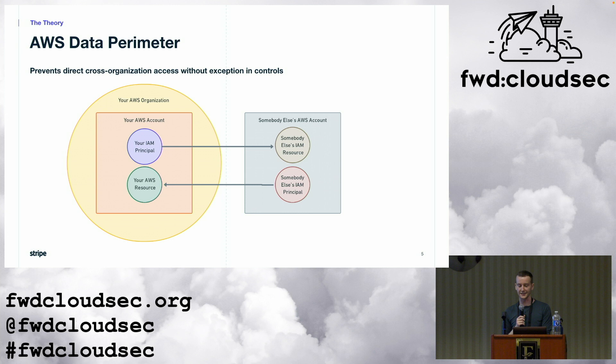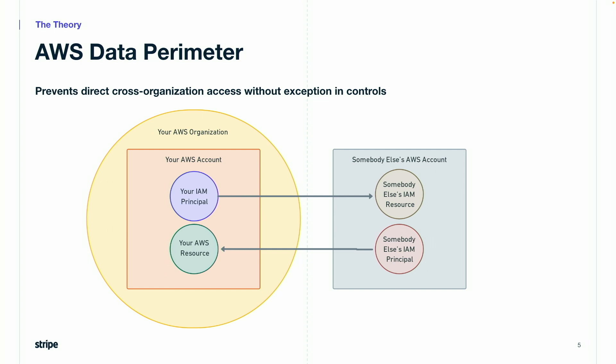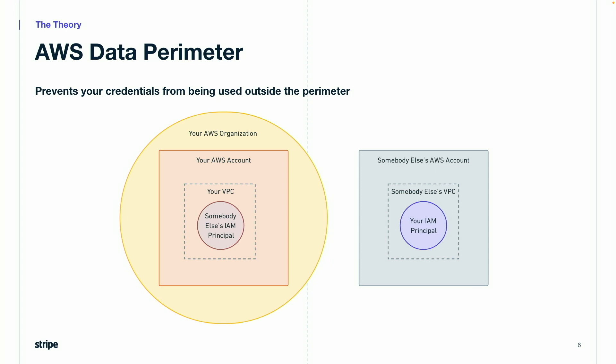There are six fundamental AWS perimeter controls, corresponding to six types of cross-organizational access. This diagram shows two of the most basic types: your principals accessing somebody else's resources, and somebody else's principals accessing your resources. Obviously, it's necessary to have some trust relationships — you need to be able to trust your vendors and your customers — but these trust relationships should be denied by default, centrally managed, and require a high level of approval to enable. This shows another way things can go wrong: credentials crossing organizational boundaries — somebody else's credentials making requests from within your network, or your credentials being used outside of your organization.